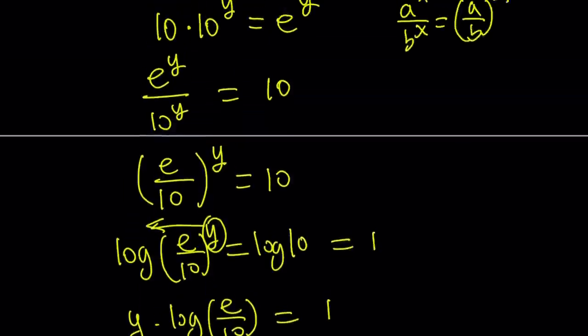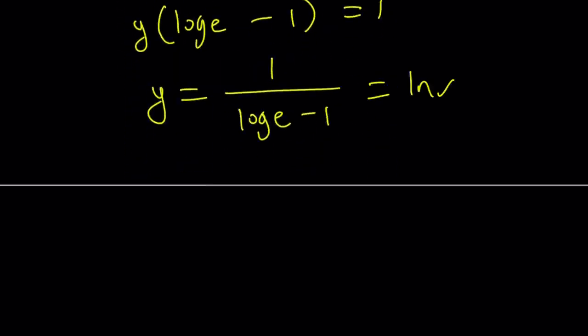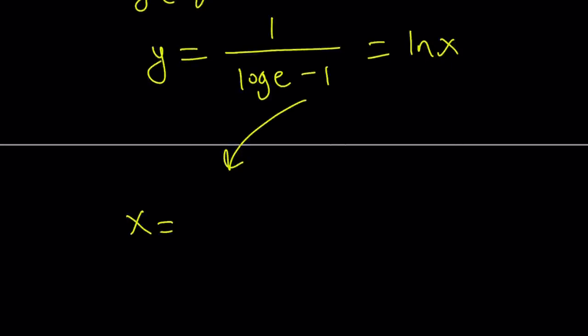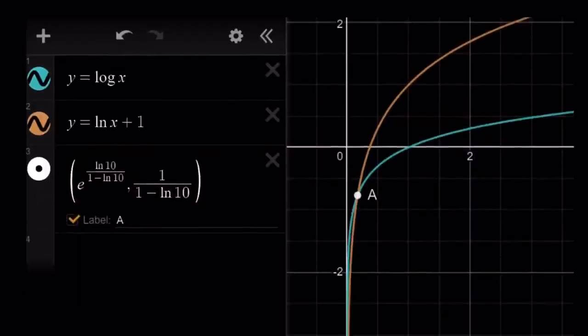So now divide both sides by that and you get y equals 1 over log e minus 1. But remember y is ln x. So we're going to set this equal to ln x and do e to the power of both sides. Since ln x is that, x is going to be e to the power 1 over log e minus 1. Now we had a different-looking result before — that was x equals e to the power ln 10 over 1 minus ln 10, or x equals 10 to the power 1 over 1 minus ln 10. If you go ahead and compare these values, you're going to realize that the values are the same.